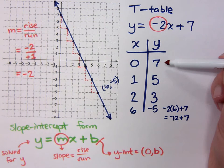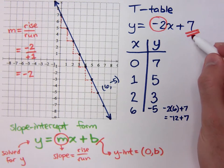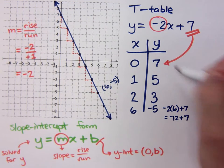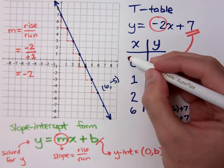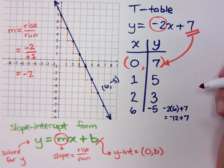And notice what you had here from the t-table. I plugged in 0 up here, and what did I get out? 7. So this 7 right here, this constant, is the same number that I see here when I plugged in 0. So I get my y-intercept right there at 0, 7. Right?